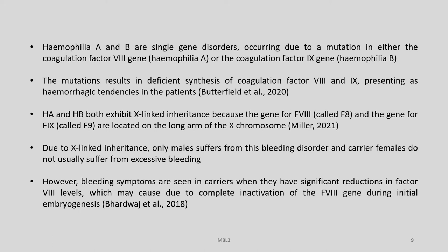The mutations result in deficient synthesis of coagulation factors 8 and 9 respectively for Haemophilia A and B, presenting as haemorrhagic tendencies. HA and HB both exhibit X-linked inheritance because the genes for factor 8 and factor 9 are located on the long arm of the X chromosome, with no corresponding location on the Y chromosome. Due to X-linked inheritance, only males typically suffer from this bleeding disorder. Carrier females do not usually suffer from excessive bleeding because the corresponding normal X chromosome acts as a buffer. However, bleeding symptoms are seen in some carriers when factor 8 levels are sufficiently reduced due to incomplete inactivation of the factor 8 gene during embryogenesis.